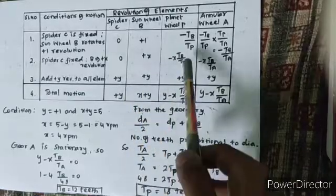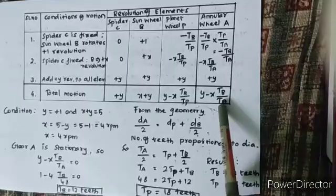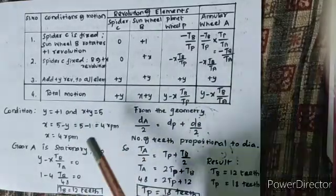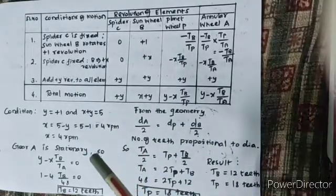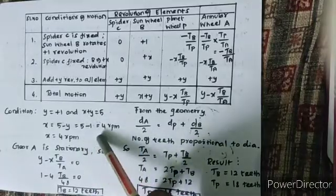So in that way, plus Y added. Total motion: Y, X plus Y, Y minus X TB by TP, Y minus X TB by TA. Conditions: Y is equal to plus 1, X plus Y is equal to 5. So X is equal to 5 minus Y, which is 5 minus 1 equals 4 RPM.